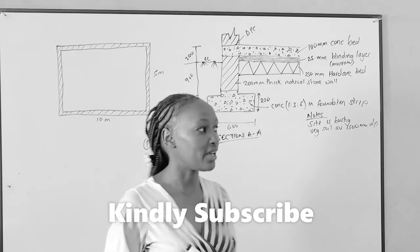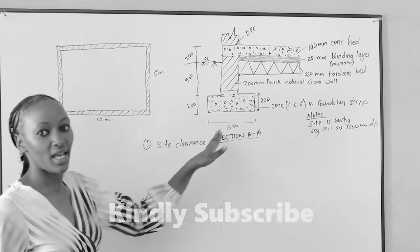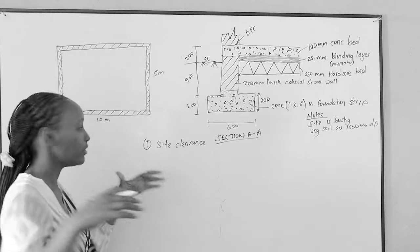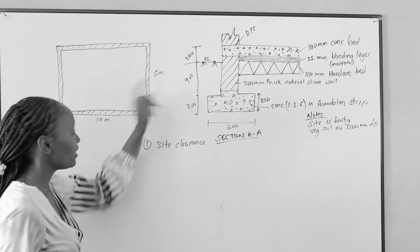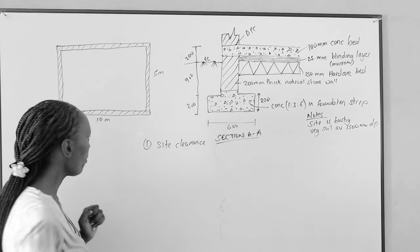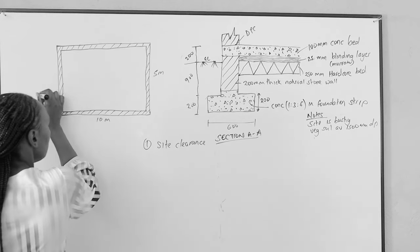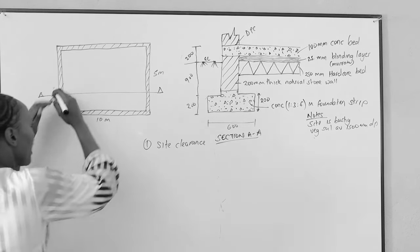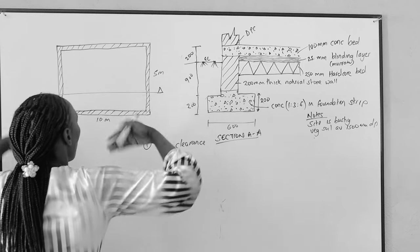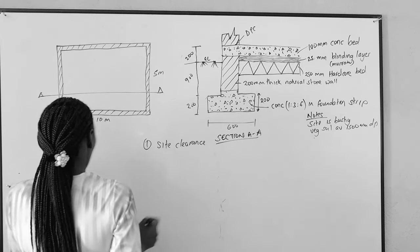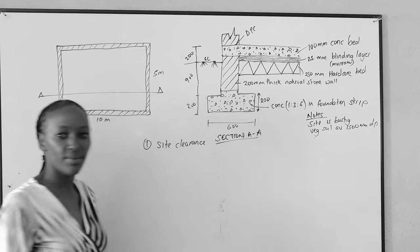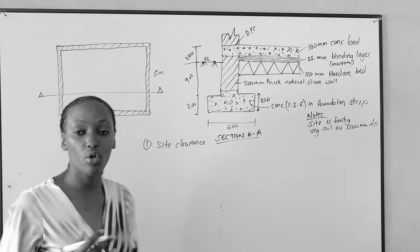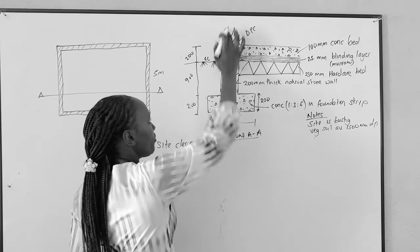To measure site clearance, you are given a plan and a section. The plan shows how we see the building from above — the length is 10 meters and the width is 5 meters. The section, say section AA, shows the details of the walls from the foundation to the top of the slab — these are the superstructural walls.